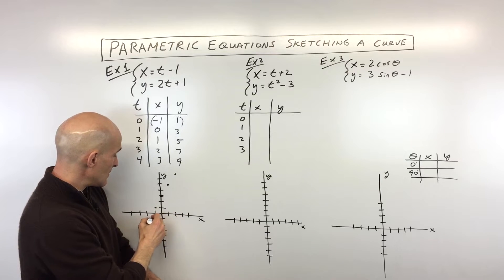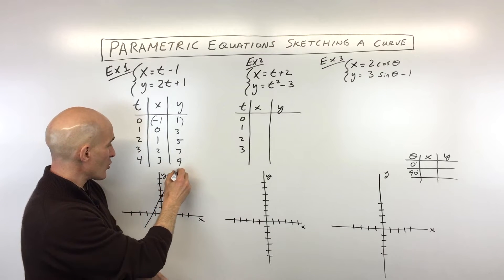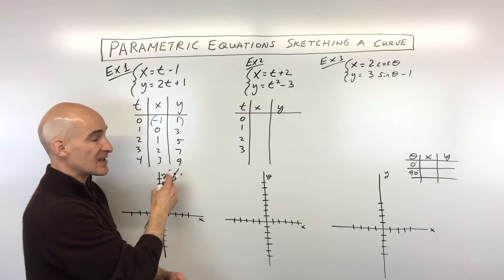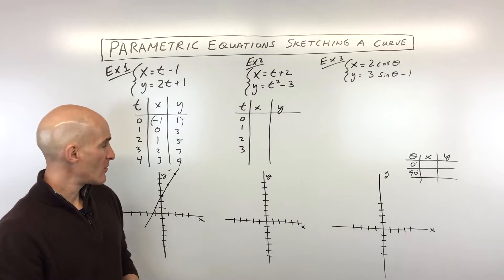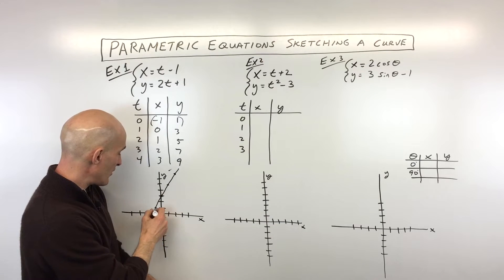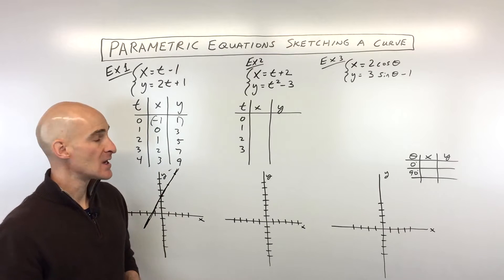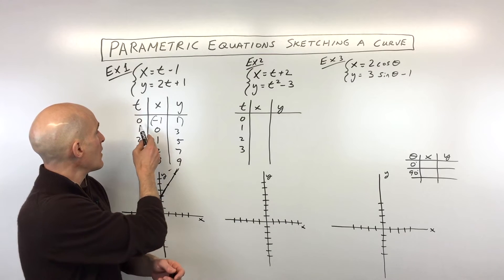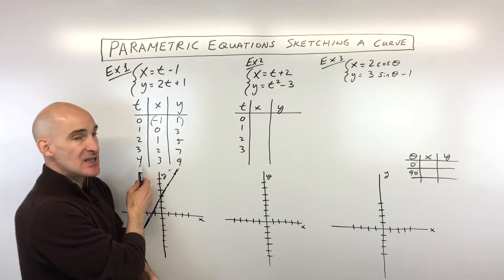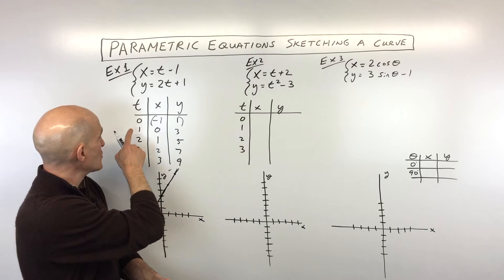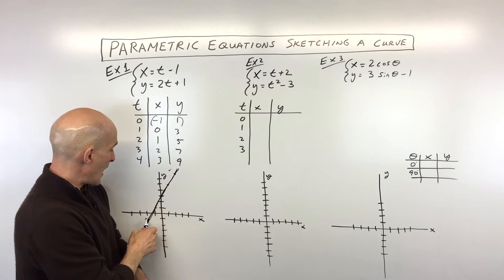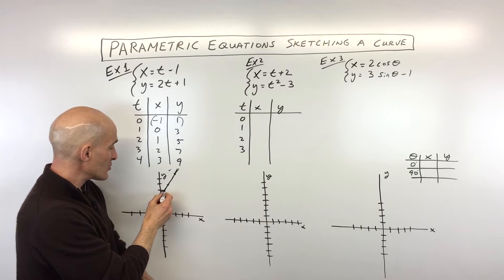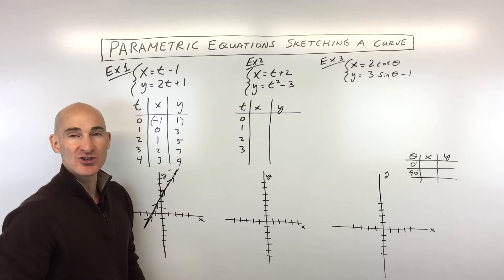So now when you graph these parametric curves, we're so used to when we draw a graph, we put like arrows to show that it keeps going in both directions. You don't actually do that with parametric graphs. You just draw the curve or the line or whatever the shape of the graph is. And then what you want to do is you want to draw direction arrows. And what that means is that with increasing values of t, which direction is this object going? So you can see as t is increasing, I was plotting my points going up to the right like this. So what I would do is I would just draw some arrows indicating the direction that the object is traveling.